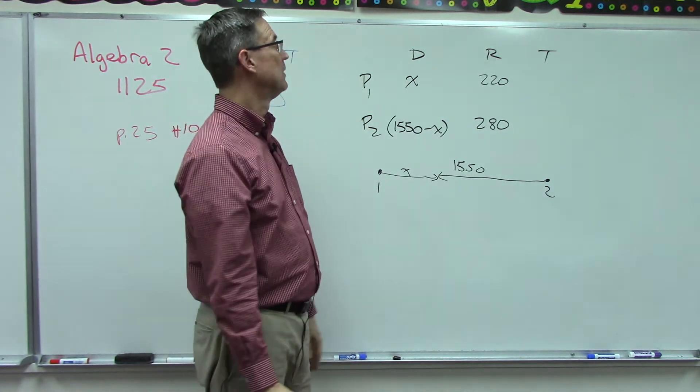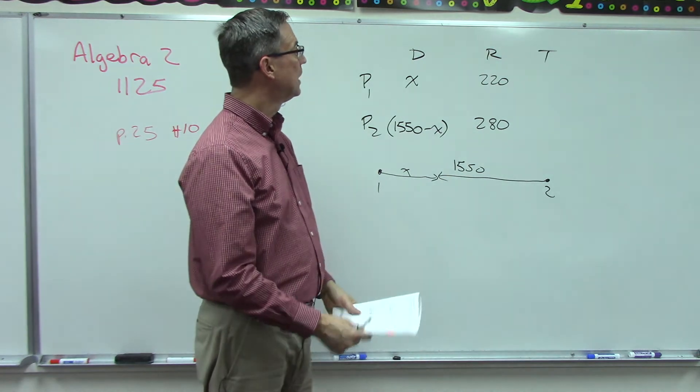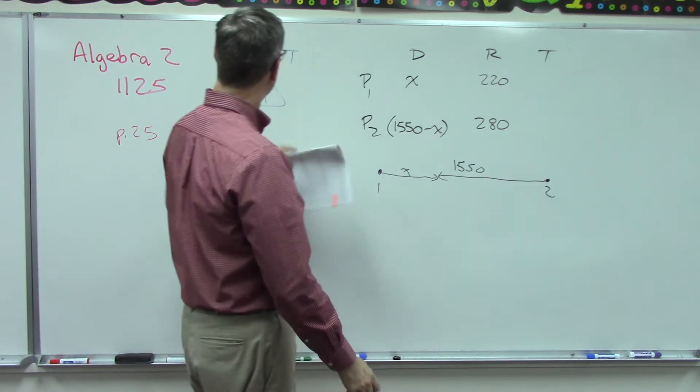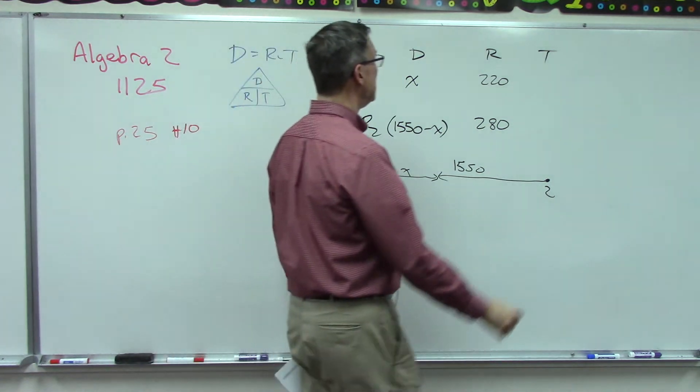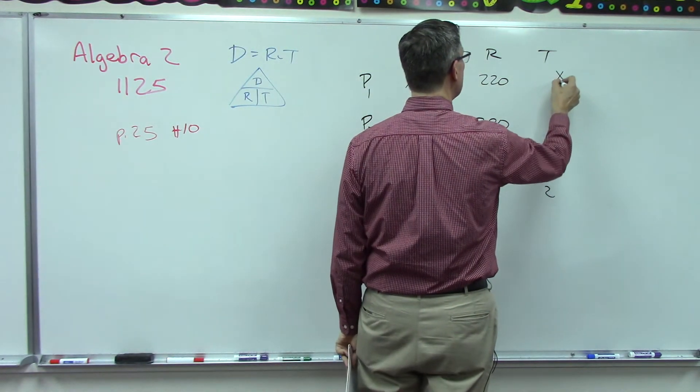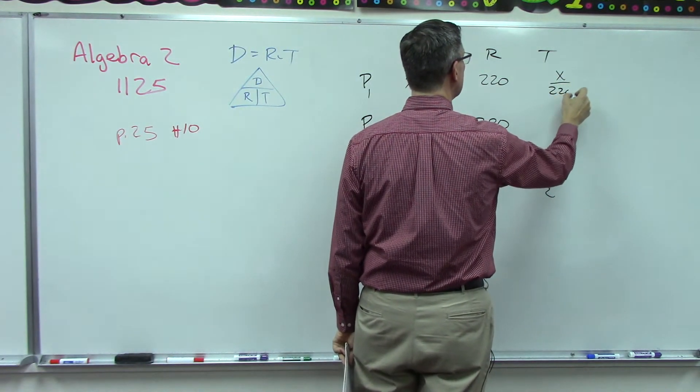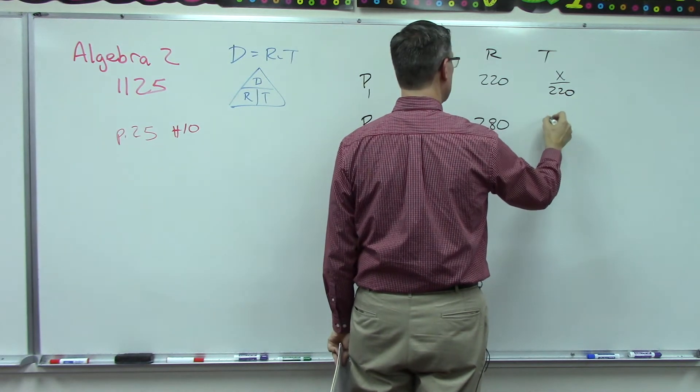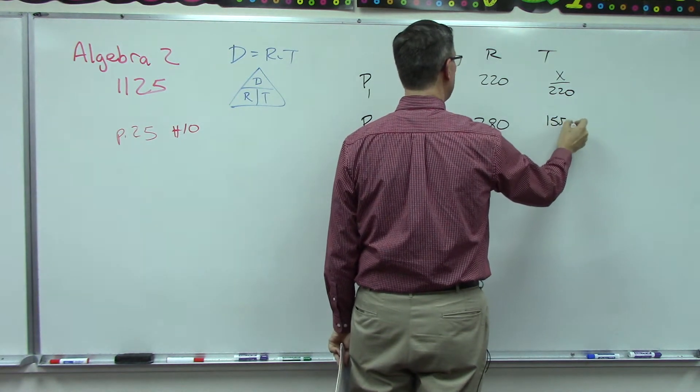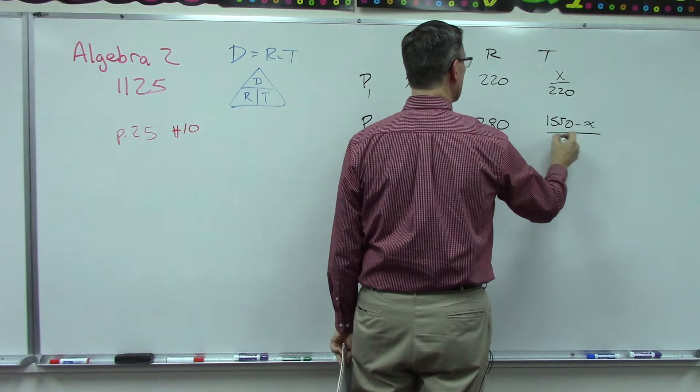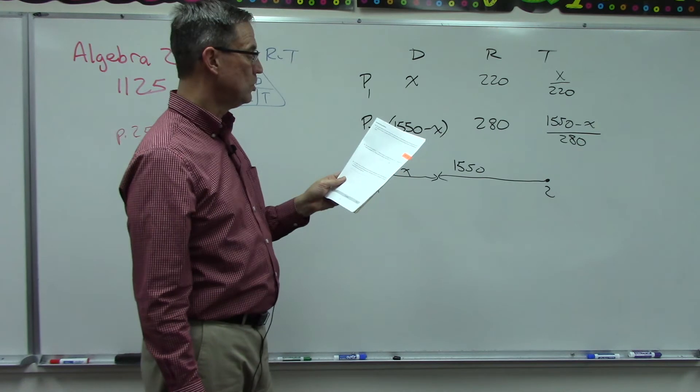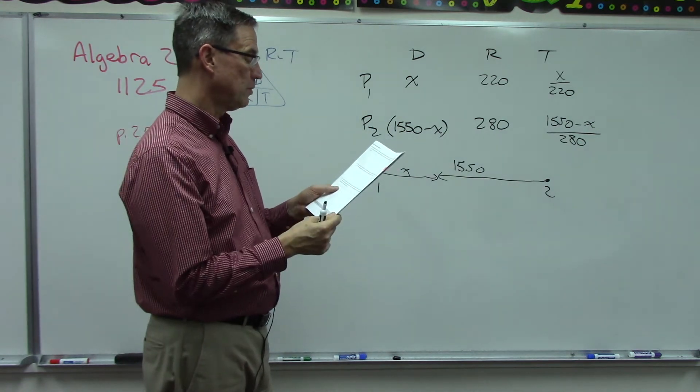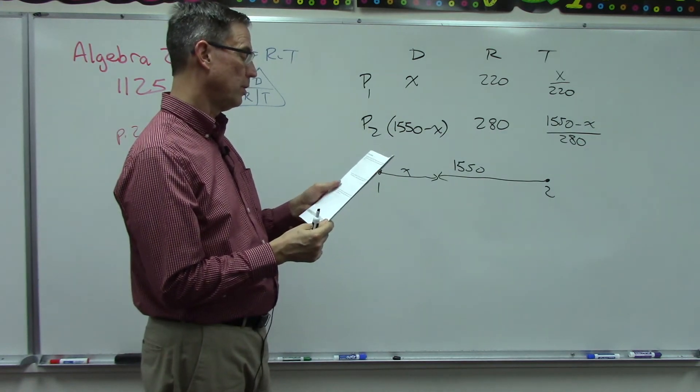Now you can get the time. Let's look at our equation here. Time is distance divided by rate, so over here now I can do x over 220 and here 1550 minus x over 280. And then here's the thing, it says that these two times have to be equal to each other.